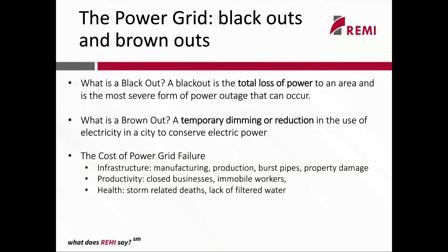When talking about power grid resilience in this context, we're really talking about blackouts and brownouts. A blackout is the total loss of power in an area and is more common. A brownout is the temporary dimming or reduction in electricity, which doesn't happen as commonly anymore but is an issue mainly in manufacturing, where an unexpected loss in power can cause huge amounts of damage to machines. Again, we're looking at the cost of power failure for infrastructure, productivity, health, manufacturing, production, closed businesses, property damage, and health costs from severe weather potentially exacerbated by the inability of the power grid to deal with that weather.